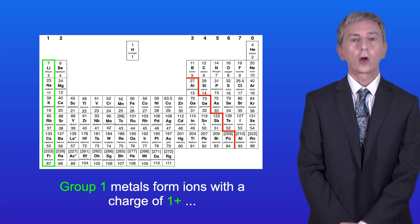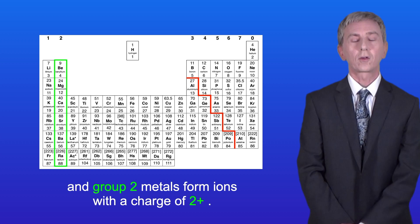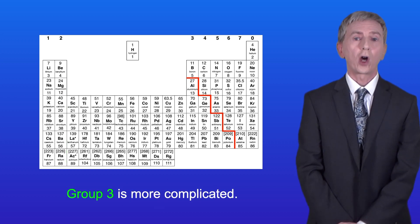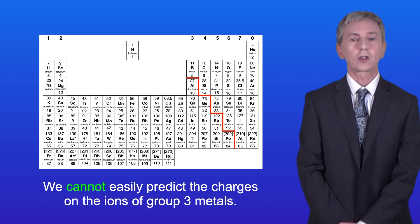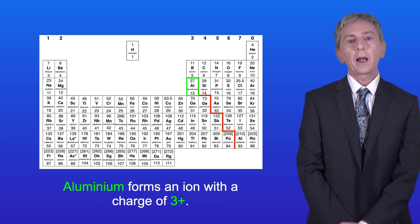Group 1 metals form ions with a charge of 1+, and group 2 metals form ions with a charge of 2+. Now group 3 is more complicated and we cannot easily predict the charges on the ions of group 3 metals. However, there is one which you need to learn and that is aluminium. Aluminium forms an ion with a charge of 3+.